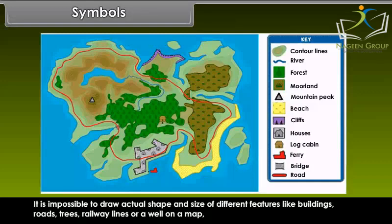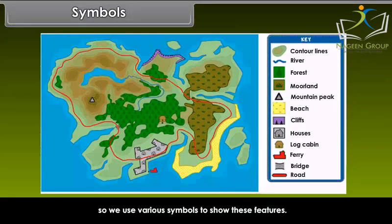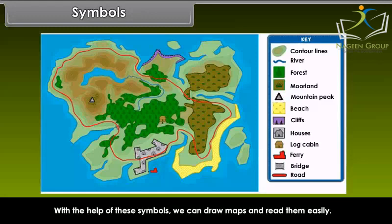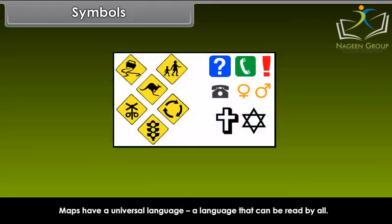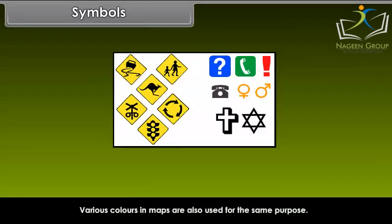It is impossible to draw the actual shape and size of different features like buildings, roads, trees, railway lines, or a well on a map. So we use various symbols to show these features. With the help of these symbols, we can draw maps and read them easily. Maps have a universal language that can be read by all. An international agreement facilitates the use of these symbols, which are called conventional symbols. Various colors in maps are also used for the same purpose.